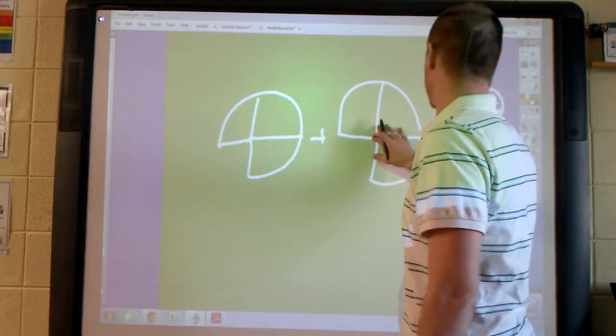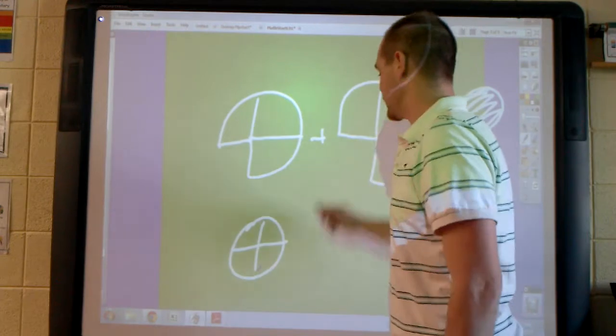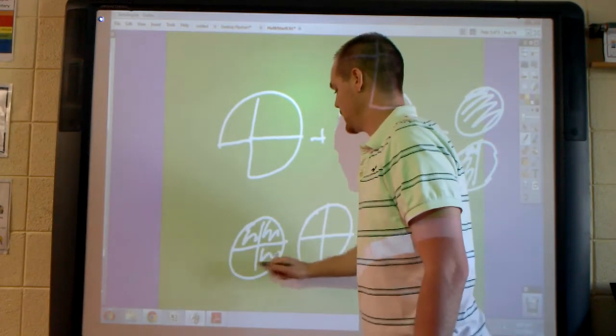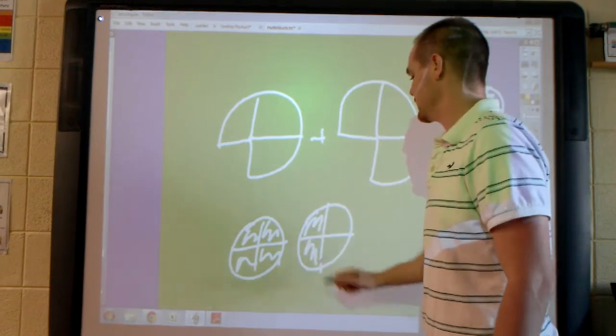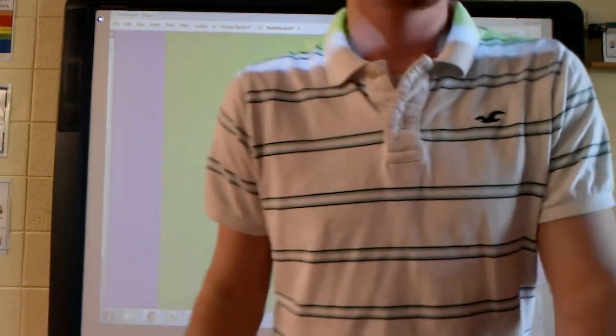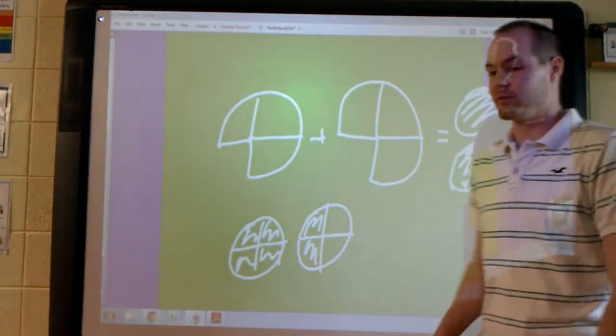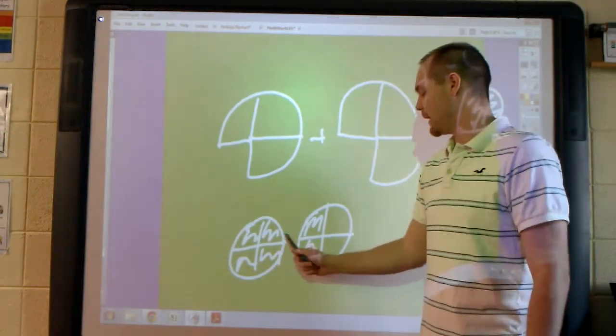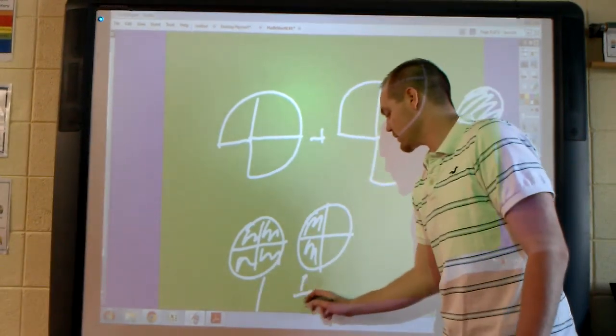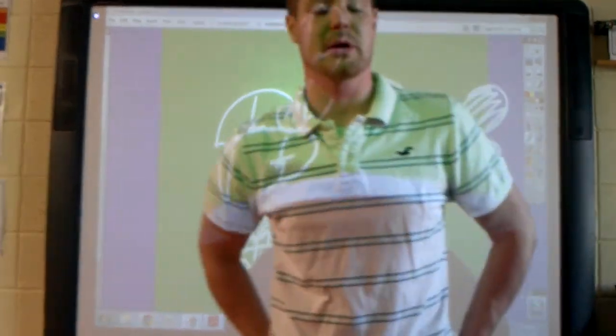So again, 3/4 plus 3/4. I end up with, oh I'm sorry, 3/4 plus 3/4 does not equal 7/4. It equals 6/4. So I have 4/4 and 2/4 left over my whole, my fraction, my reduced fraction. I end up with 1 and 1/2. You do not have to write that number down. We are going to do a practice problem.